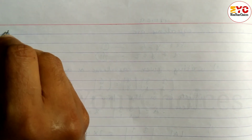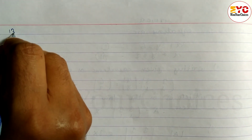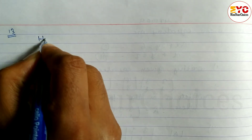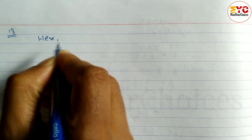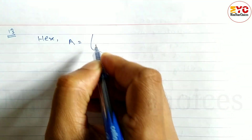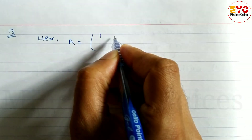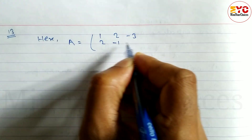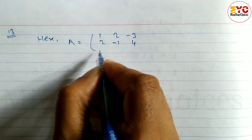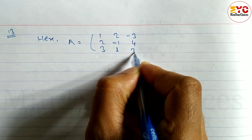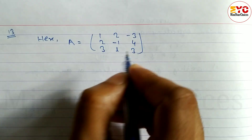Question number 13. So, matrix A is equal to: 1, 2, minus 3; 2, minus 1, 4; 3, 1, 3. This is our matrix A.